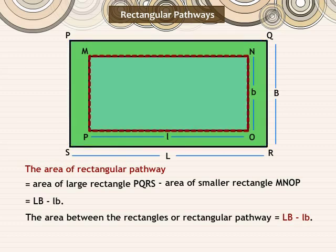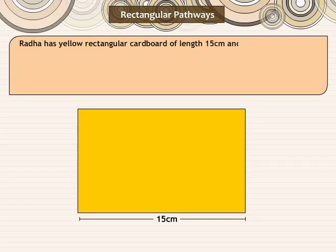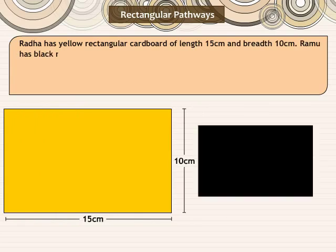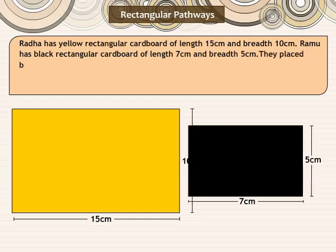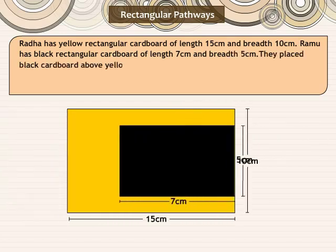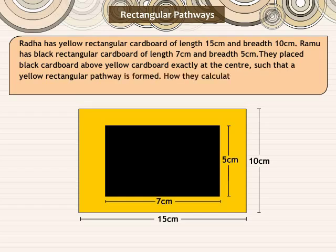The area of rectangular pathway is equal to the area of large rectangle PQRS minus area of smaller rectangle MNOP. Let us see an example. Radha has a yellow rectangular cardboard of length 15 cm and breadth 10 cm. Ramu has a black rectangular cardboard of length 7 cm and breadth 5 cm. They placed the black cardboard above the yellow cardboard exactly at the center such that a yellow rectangular pathway is formed. How did they calculate the area of the yellow rectangular pathway?